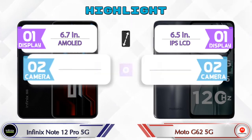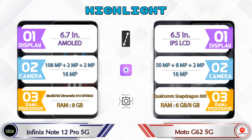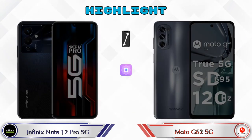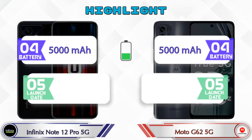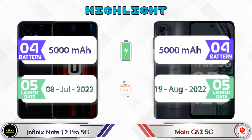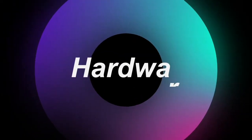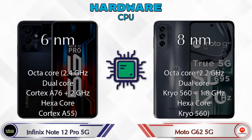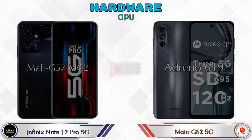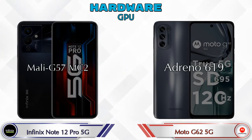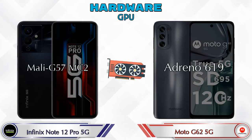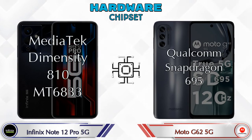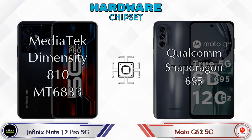First we talk about the highlights of the phones, then we go into a deep comparison. Starting with the most important part — hardware. For the GPU, the Note 12 Pro 5G has Mali-G57 MC2 and the Moto G62 5G has Adreno 619. For the chipset, the Note 12 Pro 5G has MediaTek Dimensity T810 (MT6833) and the Moto G62 5G has Qualcomm Snapdragon 695.